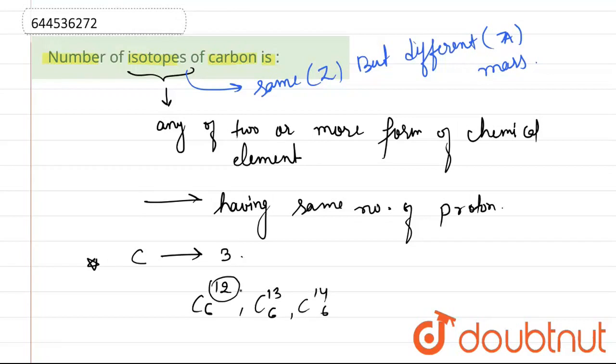So these are varying atomic masses: 12, 13, and 14. But if you see, it is having atomic number constant, that is 6. So these are three isotopes. So number of isotopes of carbon is 3. Thank you.